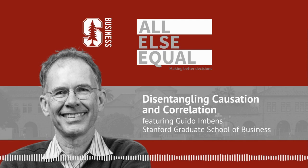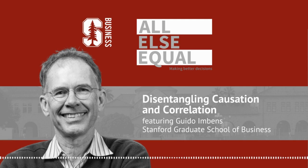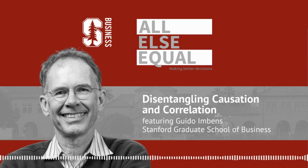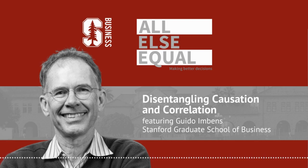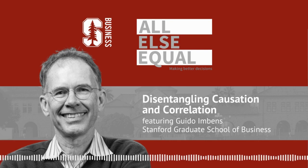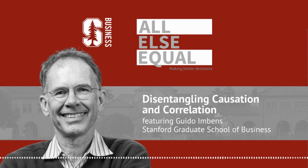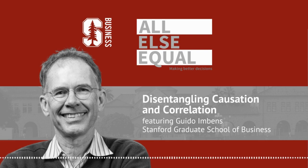This is a good time to introduce our guest: Guido Imbens, Applied Economics Professor at the GSB at Stanford University and a colleague of mine, most famously known for winning the 2021 Nobel Prize in the area of causality — how you determine whether a piece of evidence has a causal relationship. Guido, welcome to the show.